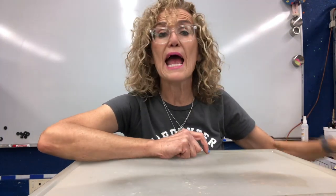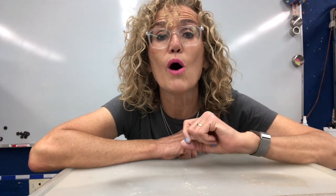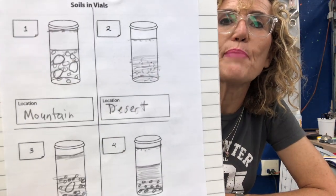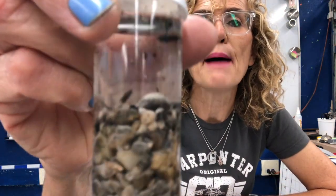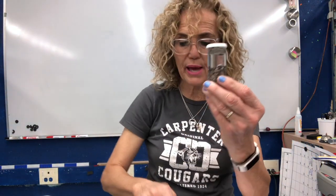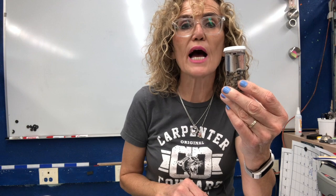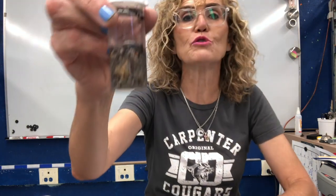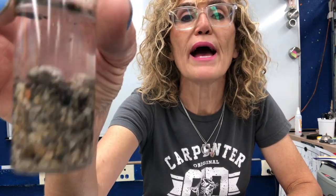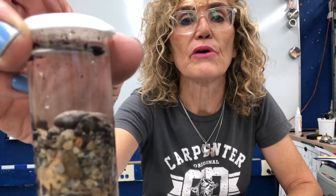Remember last time we had those materials in the vials and we added water. I'm going to take a look at those now. In your science notebook, we have this glued into the next page and I want us to take a look at each one of those materials. So mountain — this is the mountain one, M, that's number one. I want you to draw a picture of what it looks like in your science journal. I see lots of larger pebbles, larger gravel, and a little bit of organic matter on top.